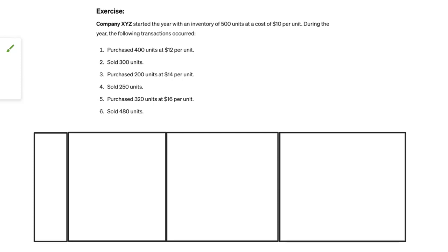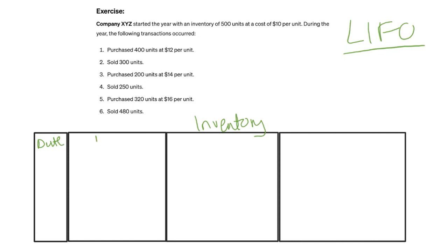In this video we will be doing the LIFO method for inventory. LIFO means last in, first out — we start with the last inventory that you bought and sell it off first. You'll usually have a table with a column for your date, a receipt and issue column, and then your balance column. This will make things easier to explain.